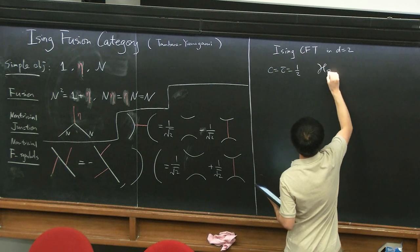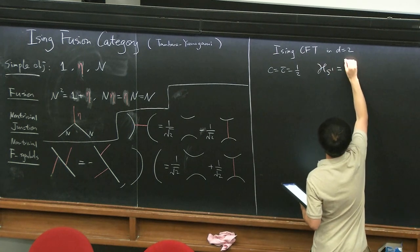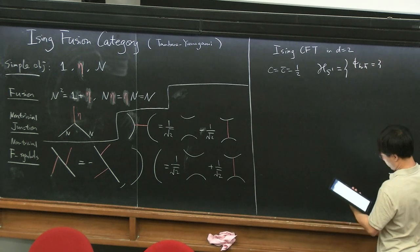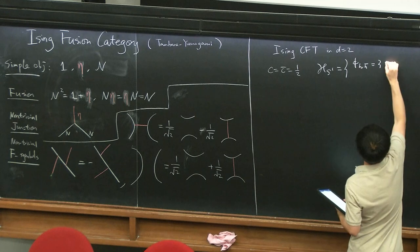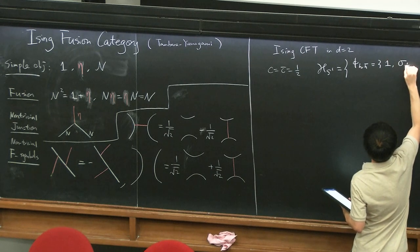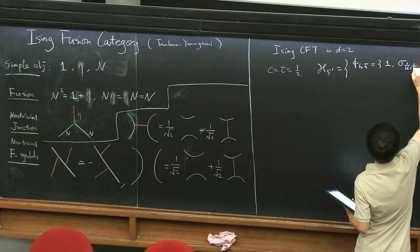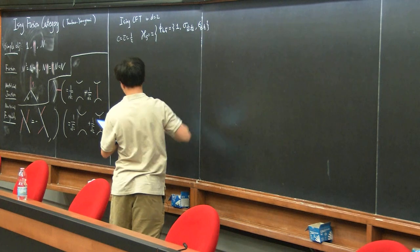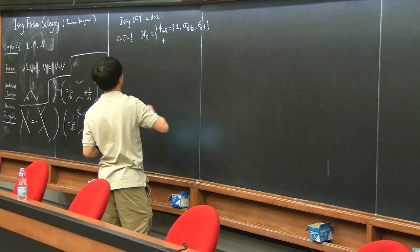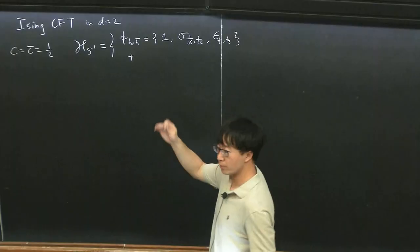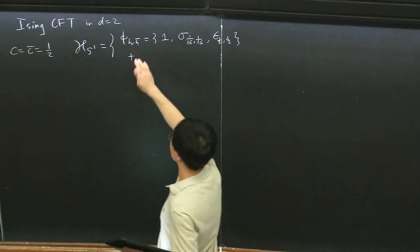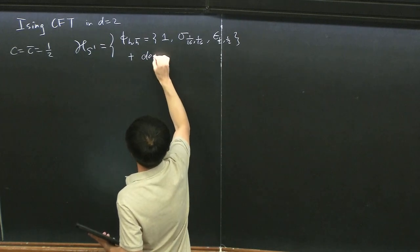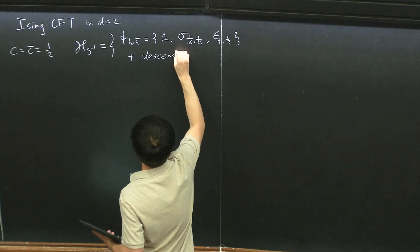The operator spectrum, equivalently the Hilbert space on S^1, contains these primaries. The identity operator, the spin operator sigma of dimension (1/16, 1/16), and the energy operator epsilon of dimension (1/2, 1/2). Because we are talking about two-dimensional CFT, the operator spectrum organizes into Virasoro primaries and descendants. The rest of the states in the Hilbert space are generated by the Virasoro descendants.